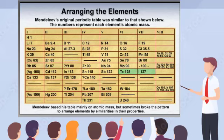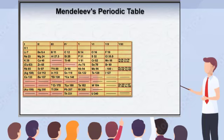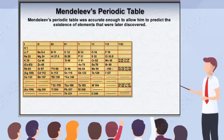He believed that the atomic masses of elements that did not fit his pattern had been measured improperly. Mendeleev left gaps in his periodic table that he believed represented elements yet to be discovered. Based on his table, he predicted the existence of at least three elements that were eventually discovered, and which filled some of the gaps.